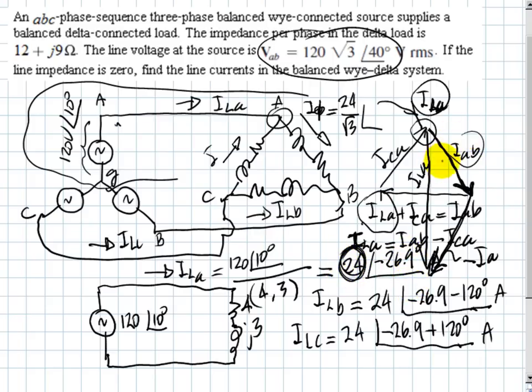What I want is to find this current here. This current here has this magnitude, so 24 divided by root 3. But the phase is what I'm trying to look for here. This one has the phase of the line current plus 30 degrees. This phase is negative 26.9 plus 30 degrees. And you do the math.